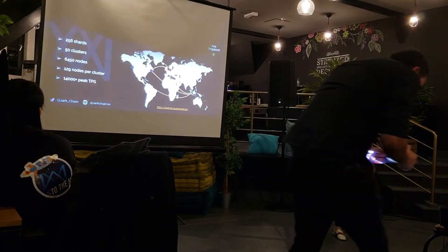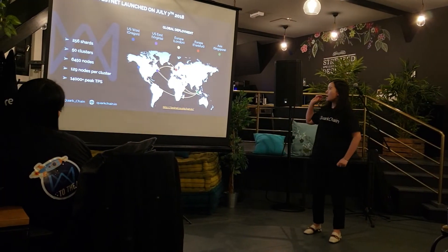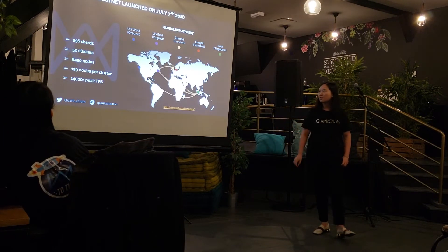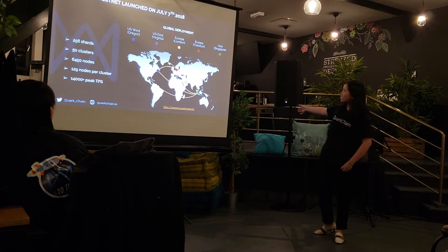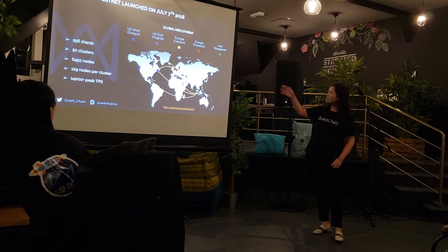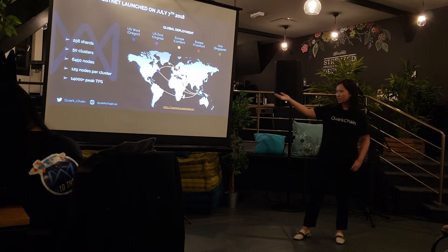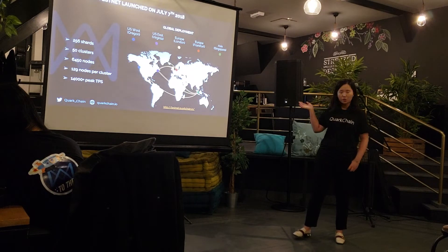We already have our testnet, which launched on July 7th. As you can see, there are about 256 shards, 50 clusters, over 6,000 nodes around the world in US West, US East, Europe, and Asia. We have 129 nodes per cluster. The peak TPS is more than 14,000. These are the official numbers.